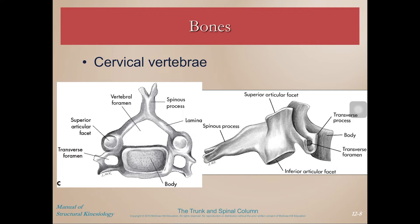The cervical vertebrae are smaller than the thoracic and lumbar vertebrae. Here's the body, and we have the vertebral foramen in the center where the spinal cord goes. The lamina are like bridges between the spinous process and the superior and inferior articular facets — this is where this vertebra articulates with the vertebrae above and below.